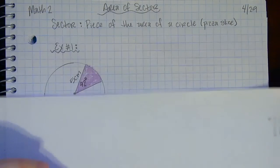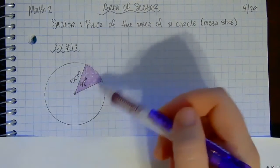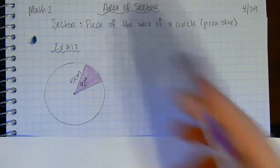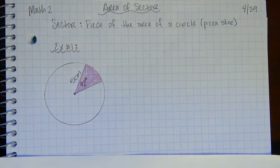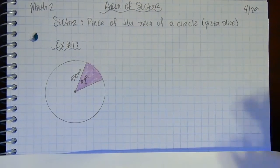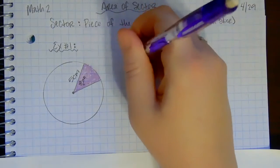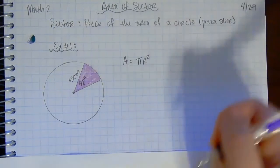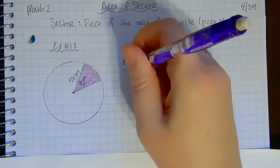This time it's all shaded in because I want the entire area of that piece, not just the outside part. It looks very similar to what we did yesterday — instead of finding the circumference first, we're going to find the area first because I want a piece of the area. I'll start by finding the area of the circle: area is π r², and the radius here is 5, so I substitute that in.